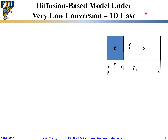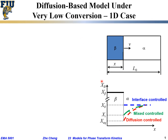Let's look at a different model — not a nucleation-growth model but a diffusion-based model under very low conversion. We are talking about the simplest case: one-dimensional growth, as drawn here. The precipitate is the beta phase and the host or matrix is the alpha phase. The beta phase is growing and the interface is moving towards the right with velocity v, where the thickness of the transformed phase is x and the initial matrix length is l₀.